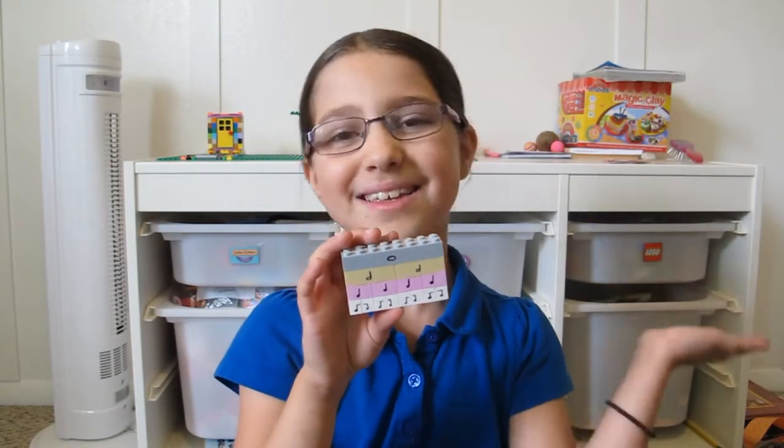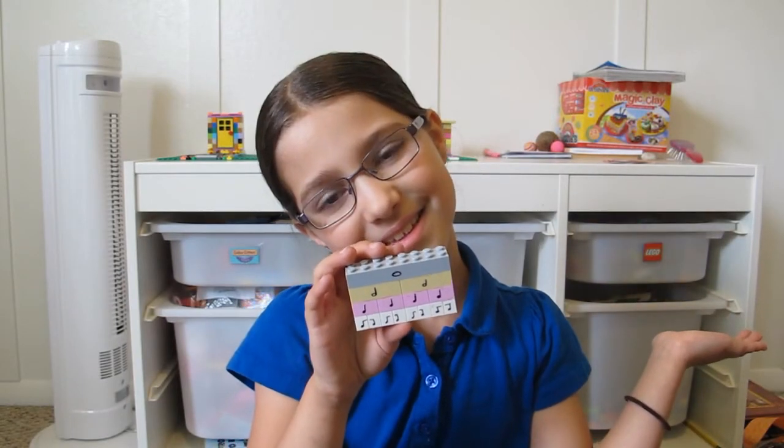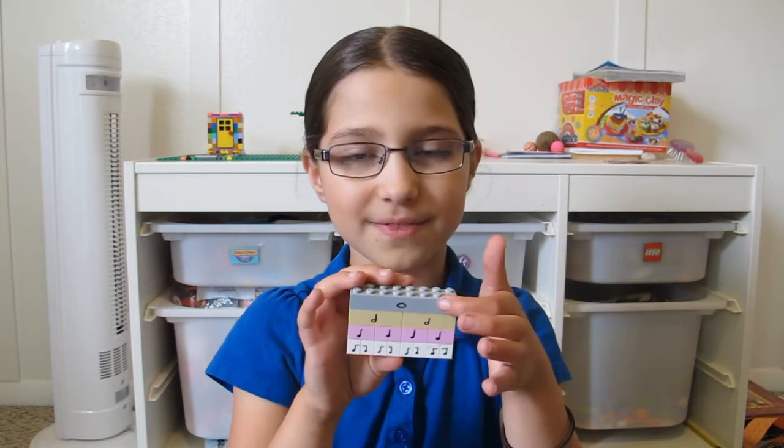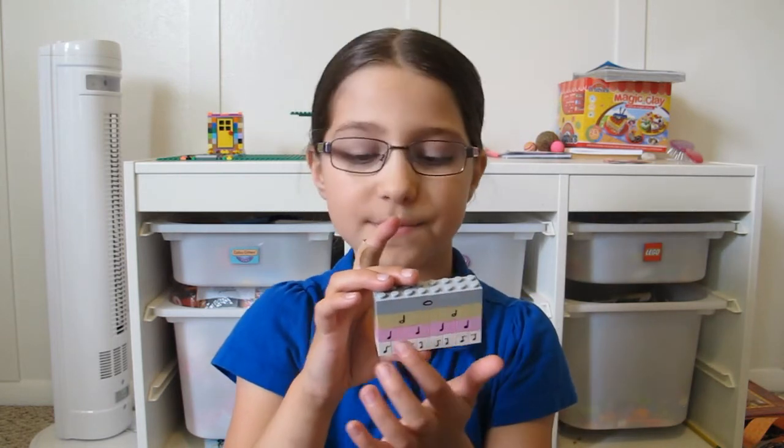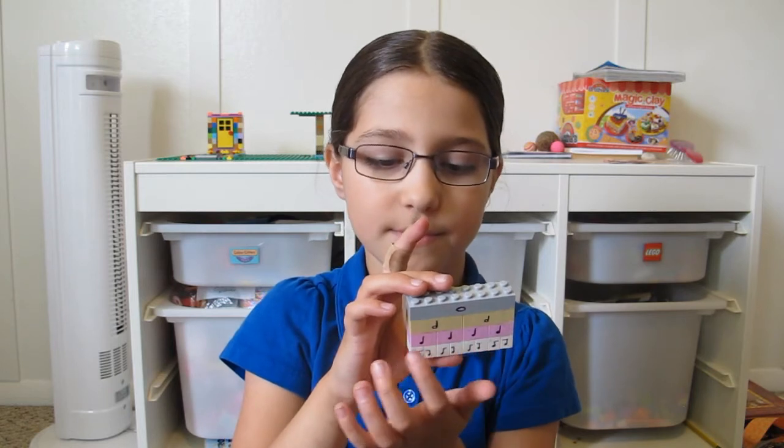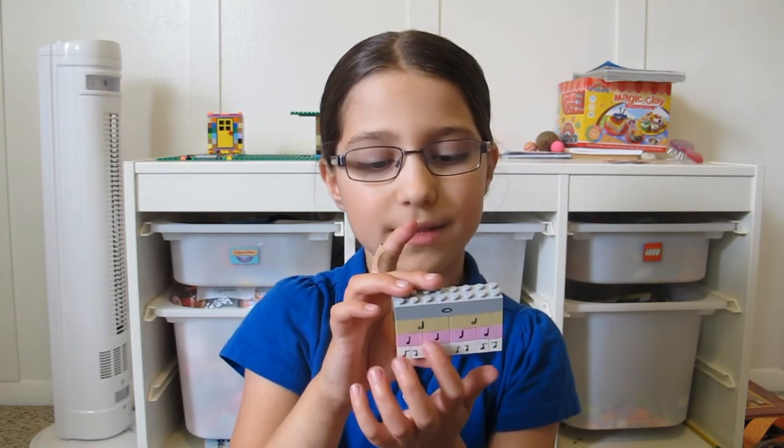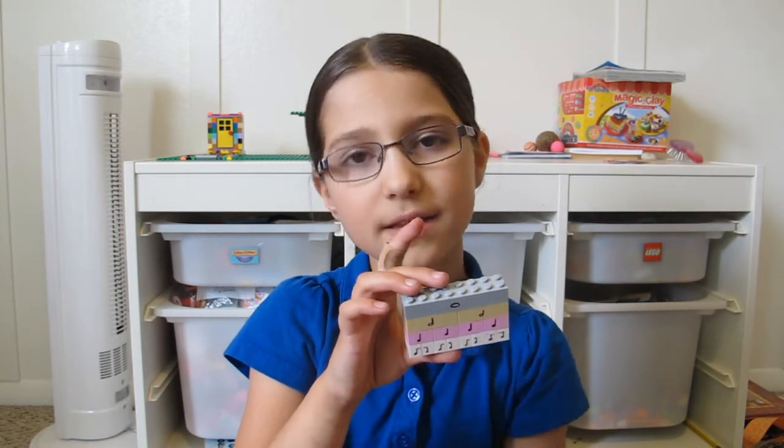Imagine that these Legos are notes. This is a whole note. A whole note can be divided into two half notes. A half note can be divided into two quarter notes. So here are one, two, three, four quarter notes.